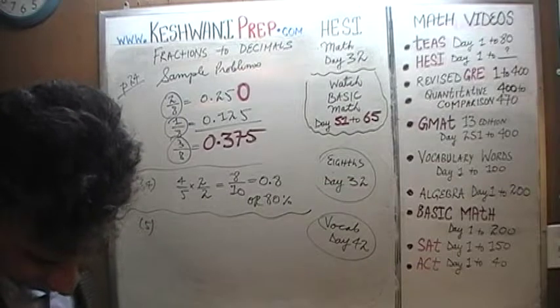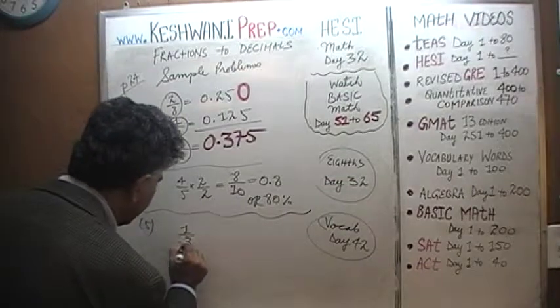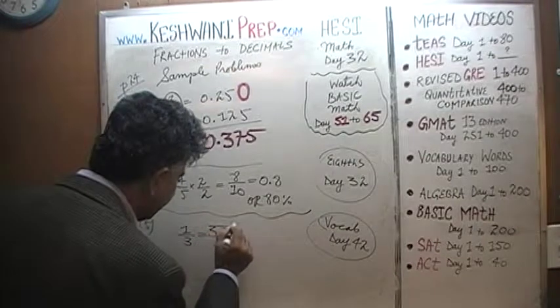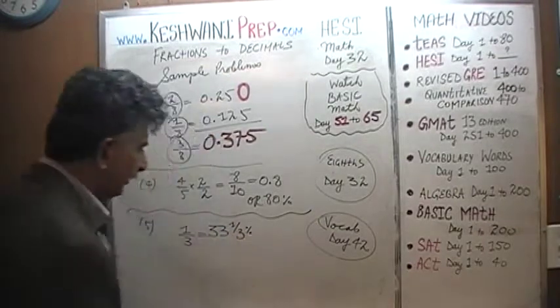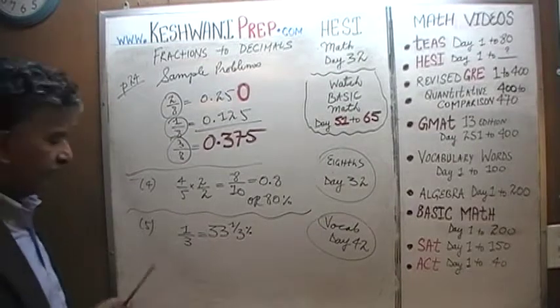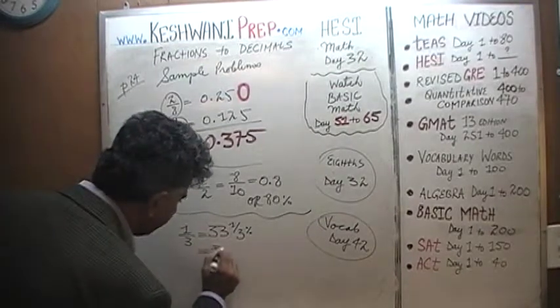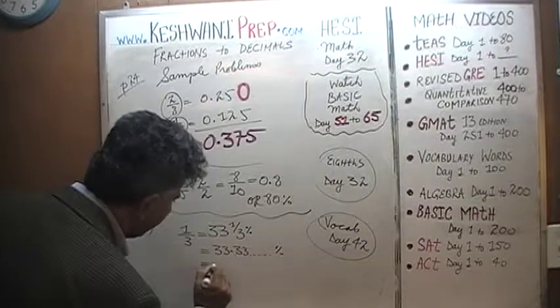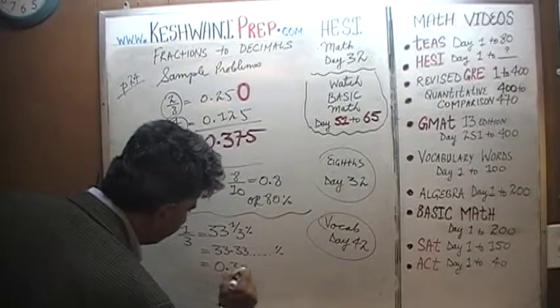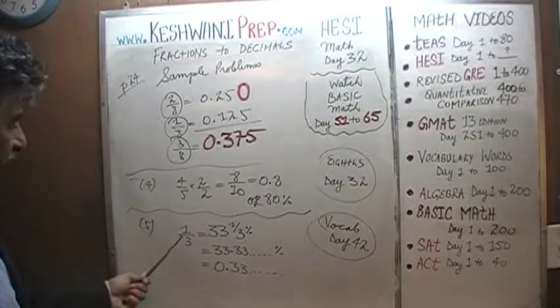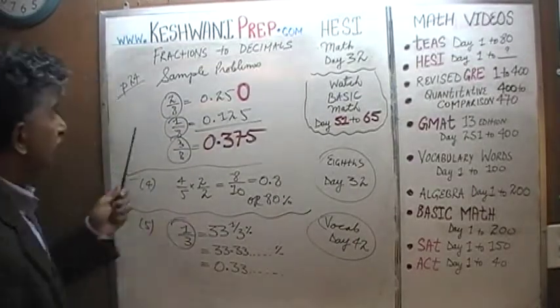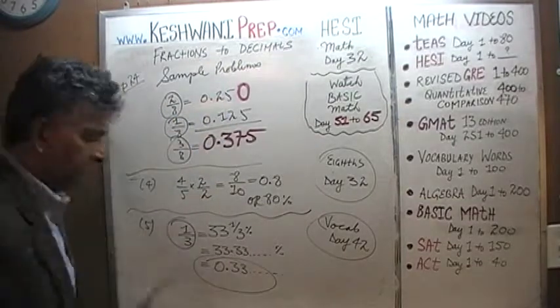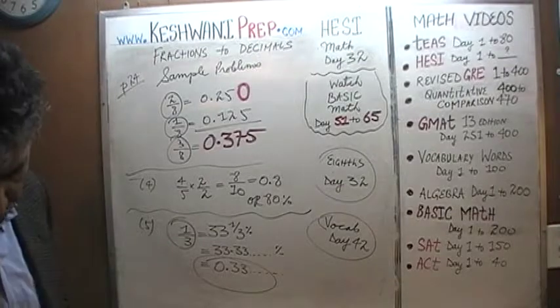Number five. Number five is a third. A third, you simply have to know that equals a third equals 33 and a third percent. That's a precise figure. Or you can write that as 33.33 repeating as a percentage, or you can write that as 0.333 repeating. And since they're asking us to convert these fractions into a decimal, one-third converted into decimal is 0.33 repeating. Let's do number six.